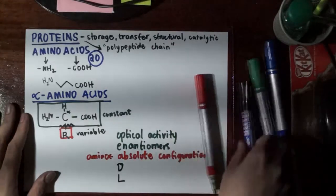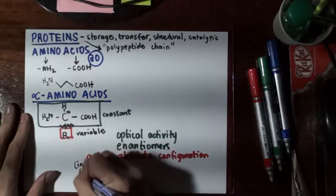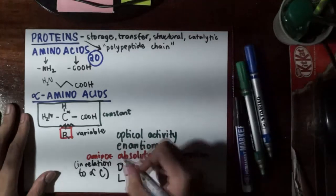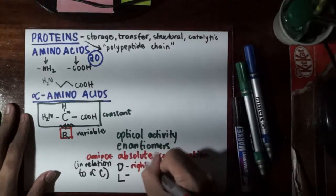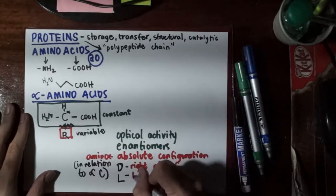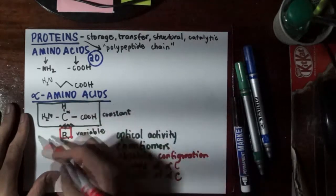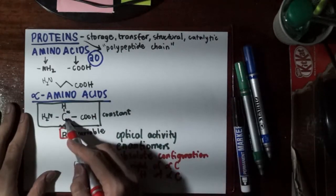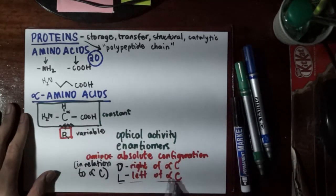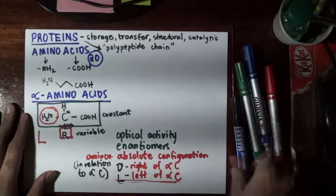The group that we're going to look at here is the amino group in relation to the alpha carbon. If the amino group is at the right of the alpha carbon, we assign D. But if the amino group is at the left of the alpha carbon, we assign L. Looking at this structure I have drawn, since the amino group is at the left of the alpha carbon, we have the L isomer of the alpha amino acid.